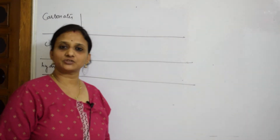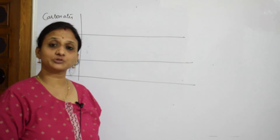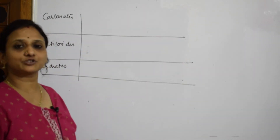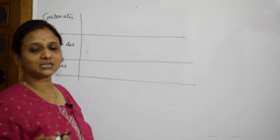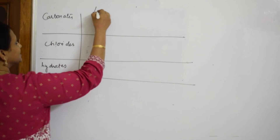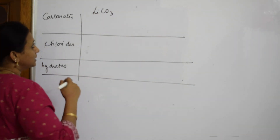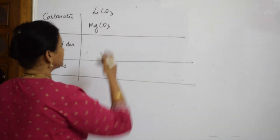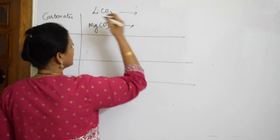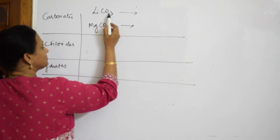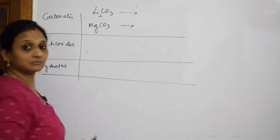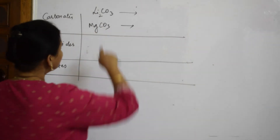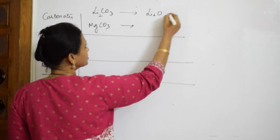Now let us speak about carbonates. Lithium combines with carbon dioxide forming lithium carbonate Li₂CO₃ — lithium is +1 and carbonate is 2−, so Li₂CO₃ is correct. Magnesium carbonate is MgCO₃. When heated, lithium carbonate decomposes into lithium oxide Li₂O plus carbon dioxide CO₂. Magnesium carbonate similarly decomposes into magnesium oxide plus carbon dioxide.